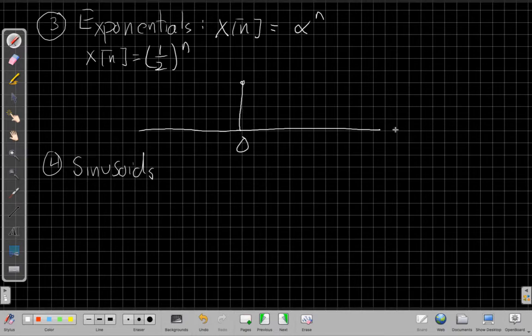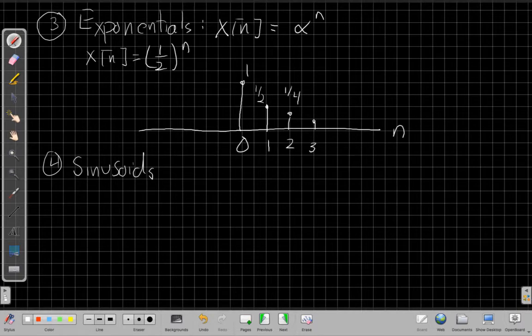When I go to n equals 1, well, 1 half to the 1 is a half. And then at time 2, it would be a half squared, which is 1 quarter. At 3, n equals 3, it would be 1 eighth. And so on like that, dying down.